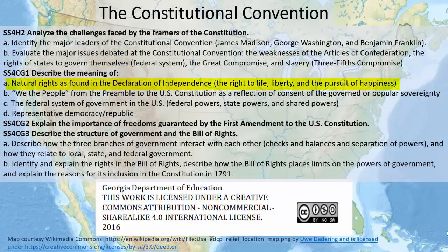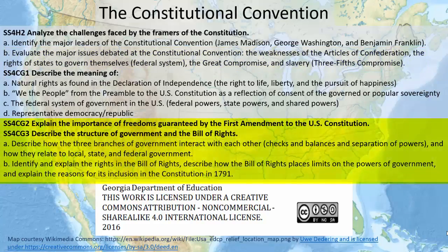The foundations for the Constitution begin in the Declaration of Independence, as it was the very rights promised there that the Constitution seeks to protect. From there we will look at what the major leaders of the Constitutional Convention felt the purpose of government should be and how it should be structured, and also take a look at some of the challenges they faced and compromises they had to make. Finally, we will take a look at the concerns many of the individual states had regarding the stronger federal government laid out in the Constitution, and how their concerns were addressed through the Bill of Rights.